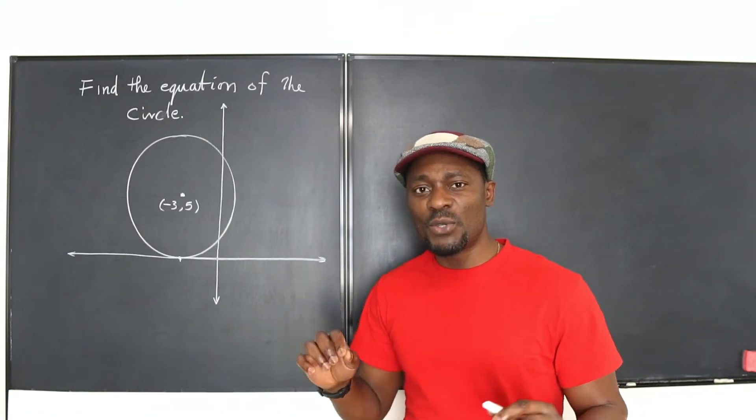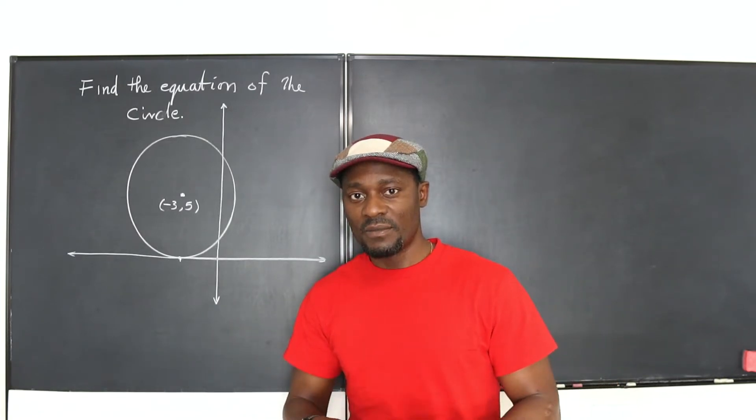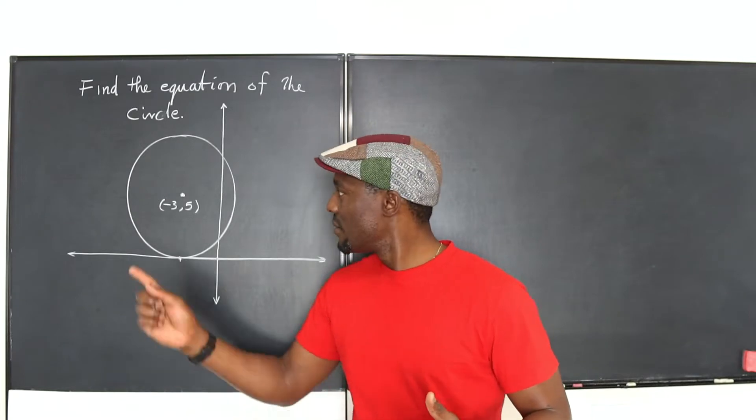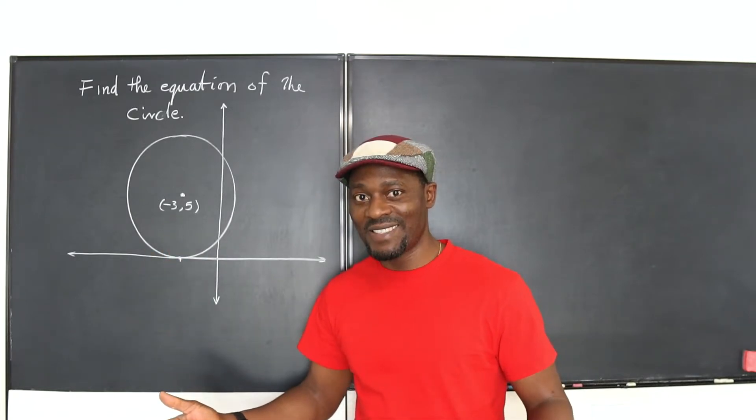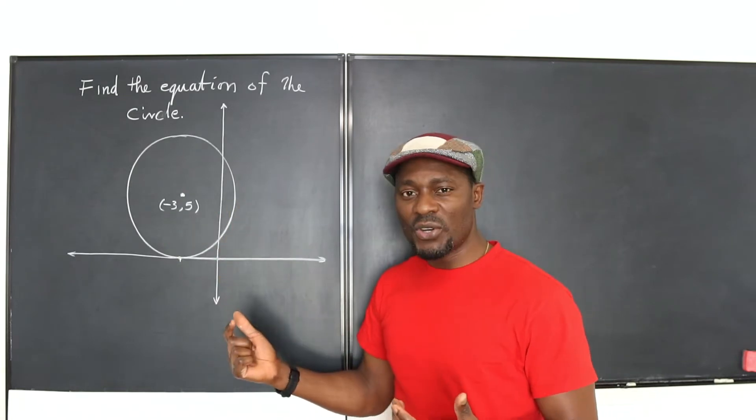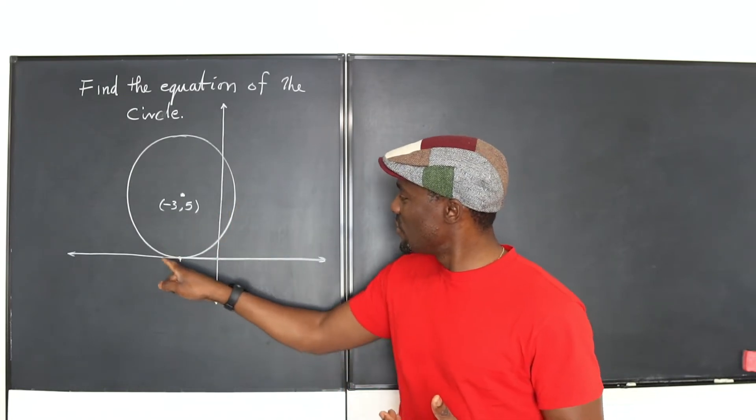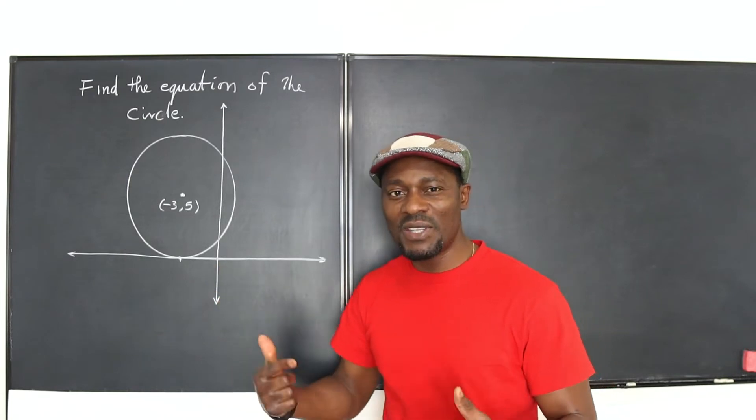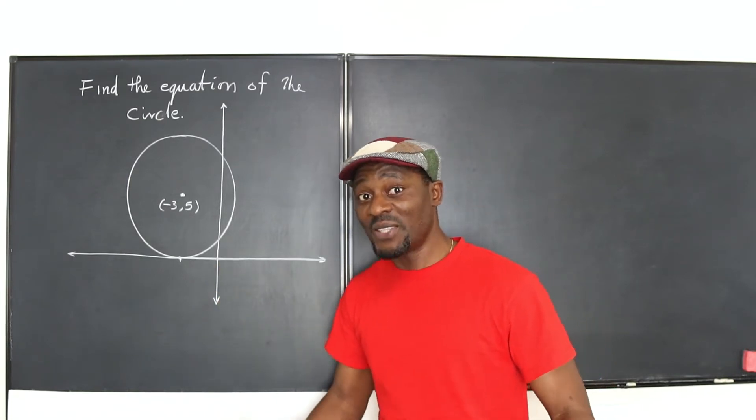So, what do I need to be able to write the equation of a circle? I need to know the center and I need to know the radius. Okay, so obviously I've got the center. Now, the extra information of this being tangent to the x-axis, how does that help me? That's the only question that I have today.